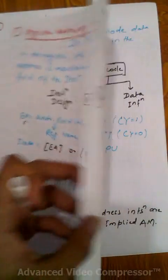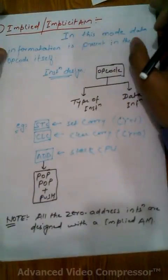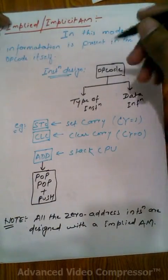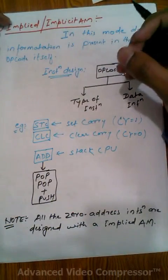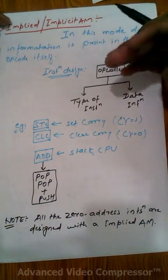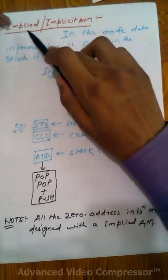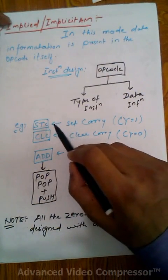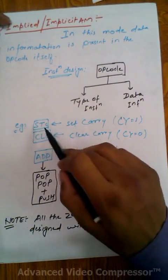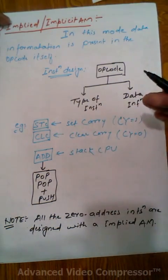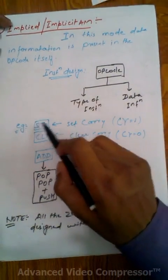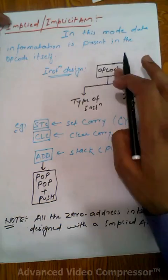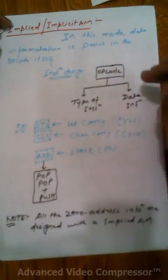The second is implied or implicit addressing mode. In this mode, data information is present in the opcode itself. The opcode is any instruction like add, subtract, push, or pop. In implied addressing mode, the data is present in the opcode itself. For example, STC means set carry — when the processor recognizes STC, it automatically sets CY = 1. The data is present in STC itself, so both the operation type and data information are present in the opcode.